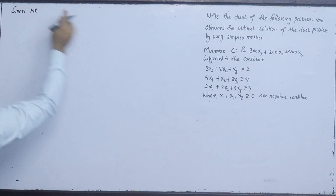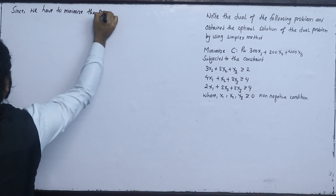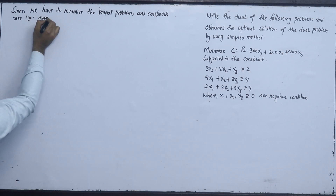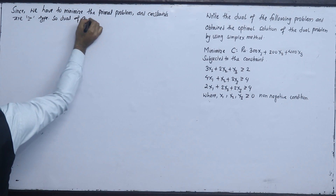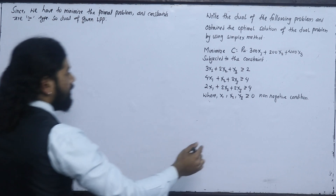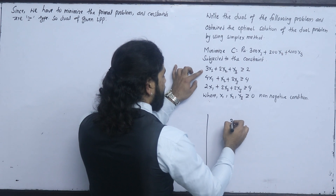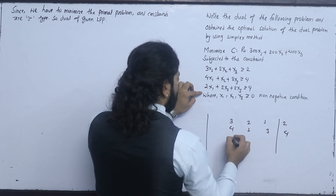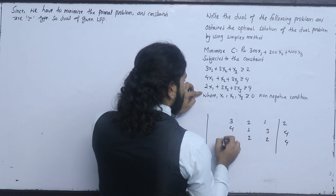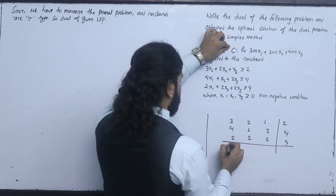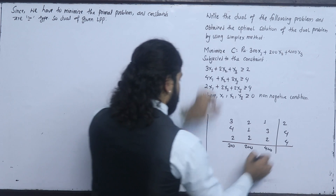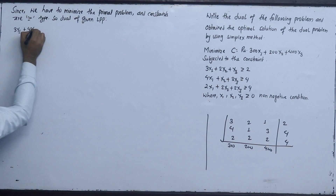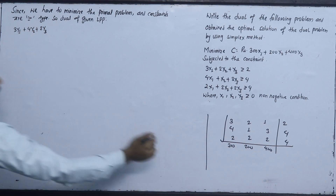We have to minimize the primal problem and all constraints are greater than or equal to type. So the dual of the given LPP — the primal matrix is 3, 2, 1, 2 with constant term 4, 1, 3, 4; and 2, 2, 2, 4 with constant term 300, 200, 400. We have to form 3y1 plus 4y2 plus 2y3, with the symbol greater than or equal to.